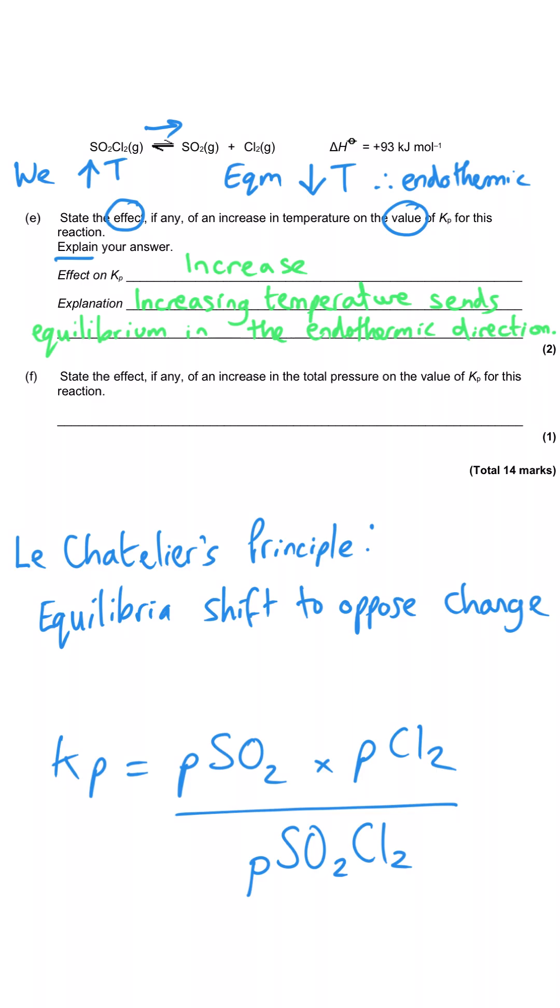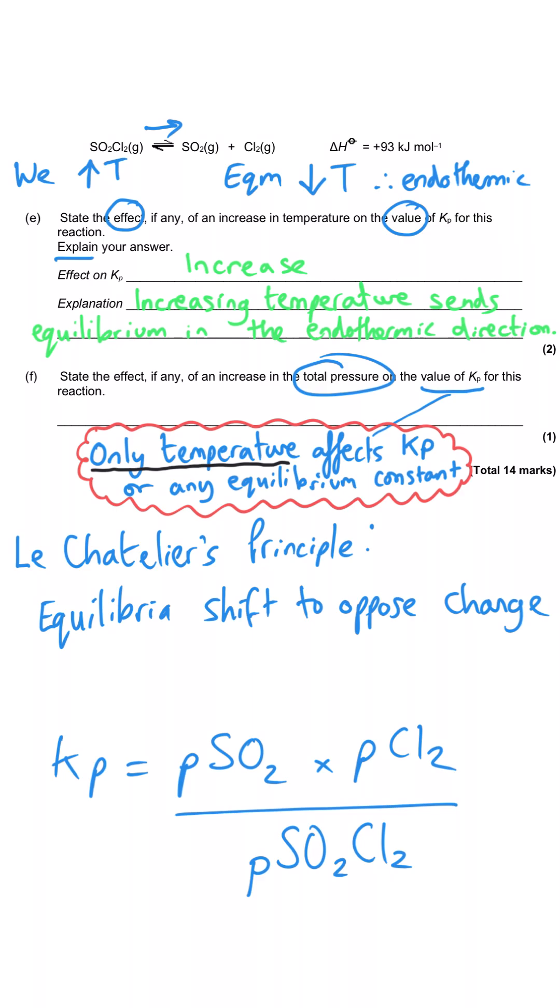And then moving on to F to finish us off, state the effect, if any, of an increase in the total pressure on the value of Kp. So we could give a detailed explanation of this. But what I suggest you do is that you remember that only temperature affects the value of Kp. So any other thing that they care to ask us about here, that is irrelevant. Only temperature affects the value of Kp. It might affect the position of equilibrium, and in fact it would, but it wouldn't affect the value of Kp. So the answer is no effect. Okay, that's the end of this video. I hope it was useful. I'll see you again next time.